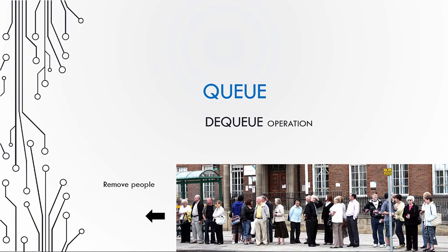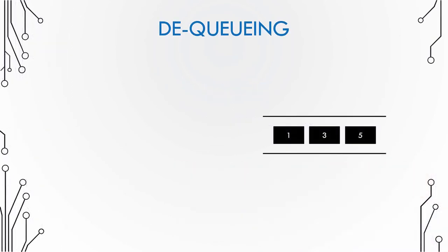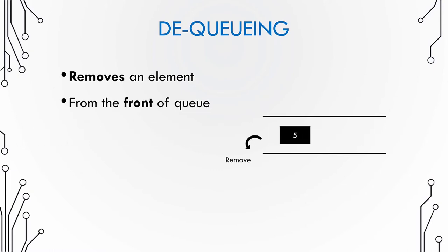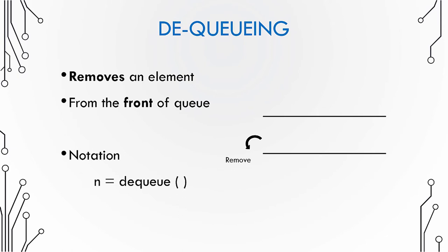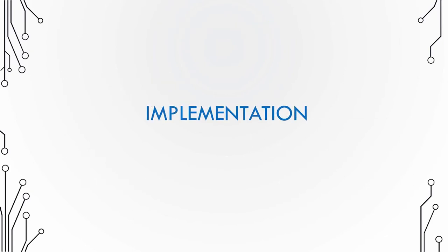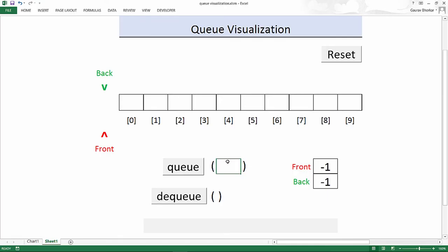In this video we will check how to perform a dequeue operation on a queue. Dequeuing removes an element from the front end of the queue. The dequeue function usually returns the value removed. In the array visualization, front points to the first element and back points to the last. When dequeuing, you first remove the value from the front, then increment the front pointer to point to the next element, which is now the front.